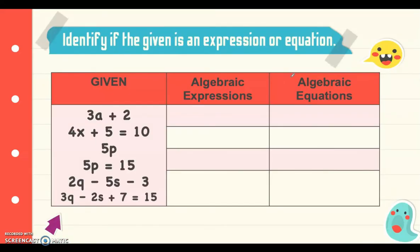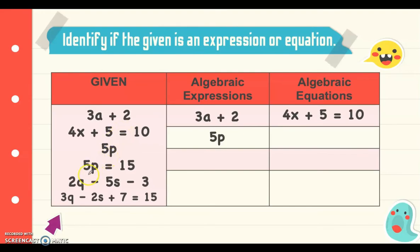Let's identify whether each given is an expression or an equation. '3a plus 2' — this is an expression; it doesn't show equality. '4x plus 5 equals 10' — that is an equation; it shows equality. '5p' — it's an expression. '5p equals 15' — is an equation. '2q minus 5s minus 3' — it's an expression. And '3q minus 2s plus 7 equals 15' — is an example of an equation.